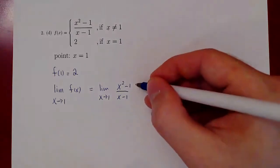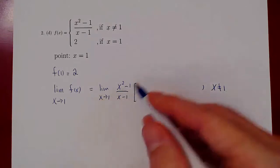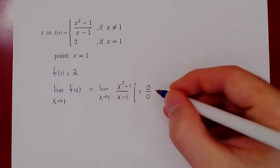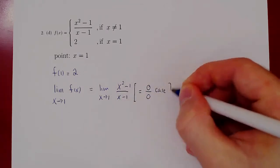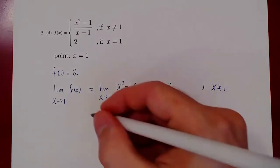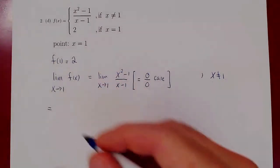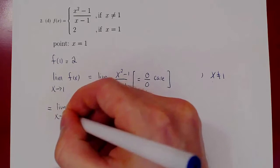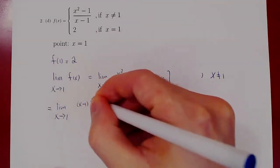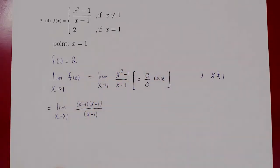As always when you have a limit, the first thing you consider is your case. As x approaches 1, x² - 1 approaches 0, and so does x - 1. So we have a 0 over 0 case. We have two polynomials, so we can figure out the problem by factoring. x² - 1 factors as (x - 1)(x + 1) divided by the single factor of (x - 1).